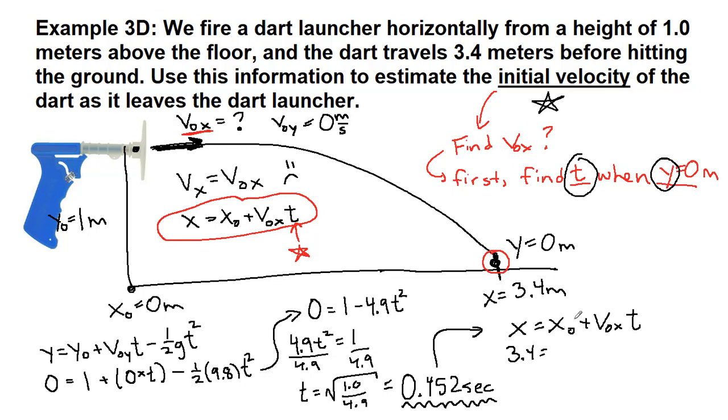The initial velocity in the x direction is our unknown times 0.452. So we will divide the left and the right side by 0.452. And we get 7.5 meters per second is our initial velocity for this bug launcher.